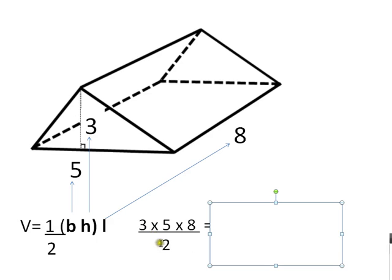Multiplying by one-half is the same as just dividing it by two. So three times five times eight is 120. 120 divided by two is 60. So the volume of this triangular prism is 60 cubic units.